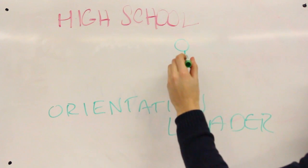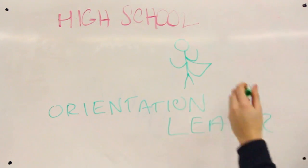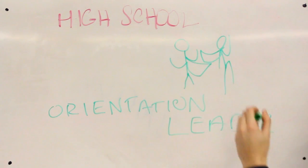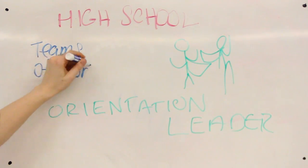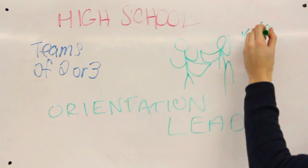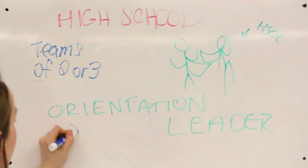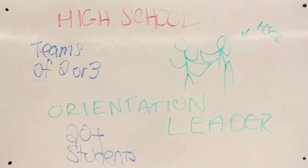High School Orientation Leaders make up the bulk of Orientation's volunteers. They work directly with a group of new university students to help ease their transition into university by guiding tours, leading activities, and answering questions. Orientation Leaders work in teams of two or three to guide a group of around 20 students throughout the two days of orientation.